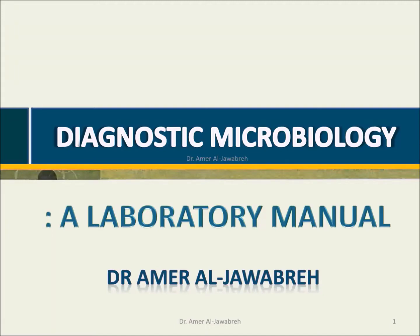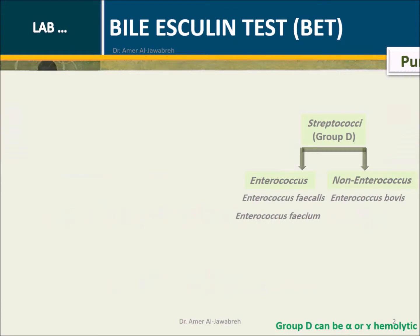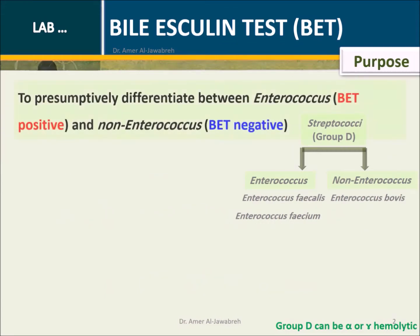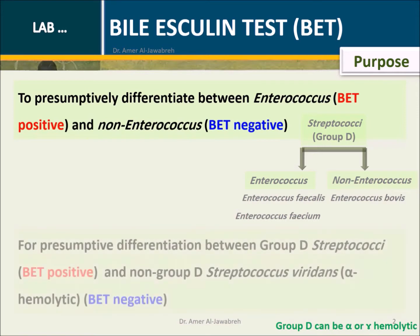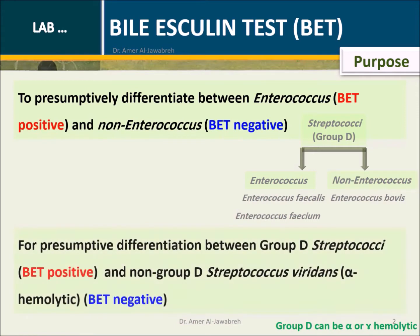Gnostic Microbiology, a laboratory manual. Bile Esculin Test Purpose: To presumptively differentiate between Enterococcus (bile-positive) and Non-Enterococcus (bile-negative), and for presumptive differentiation between Group D Streptococci (bile-positive) and Non-Group D Streptococcus viridans (bile-negative).